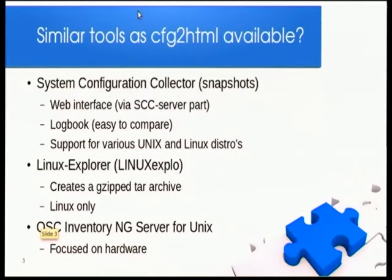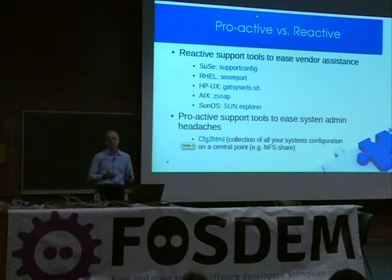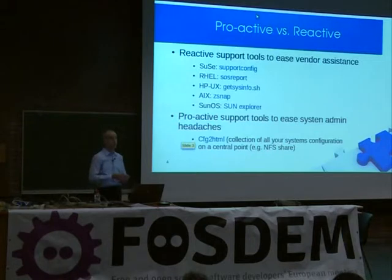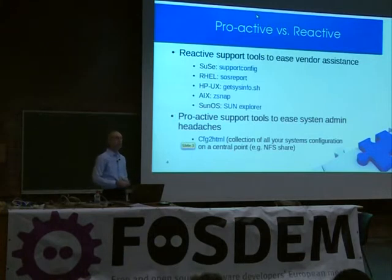Then you have a quite old tool — Linux Explorer — which is similar to what exists for Solaris. It's more a tool you use when there's a problem: you collect all the information and give it to your support supplier. The same is true for the OSCS inventory server — it's open source but more of a hardware collector. You can see these as reactive support tools, which SUSE, RHEL, and HP-UX all have — but it's after the fact, after you have a problem.